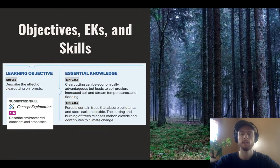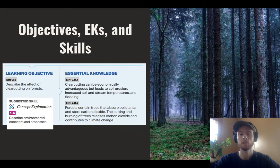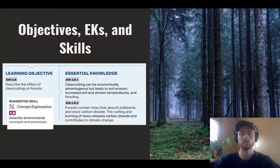The essential knowledge we need is that clear cutting is economically advantageous, but leads to soil erosion, increased stream temperature and soil temperature, and flooding. We also need to know that trees in a forest absorb pollutants from the air and store or sequester carbon dioxide from the atmosphere, which reduces the effects of climate change. Cutting trees down and burning them releases that stored carbon dioxide and contributes to climate change. Our suggested science skill for today is concept explanation.